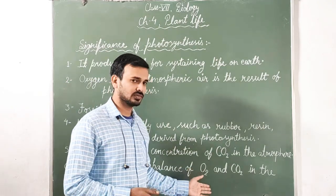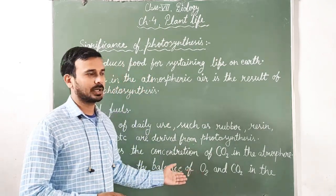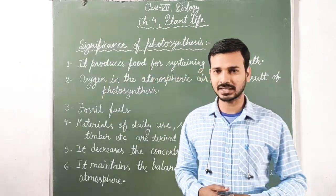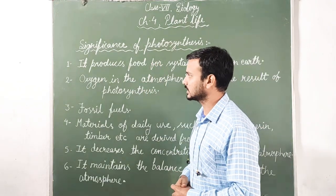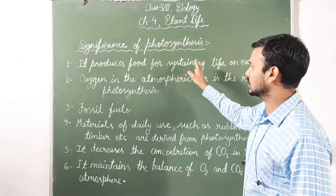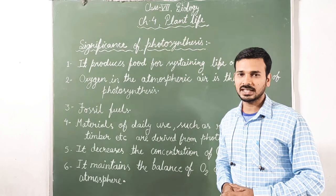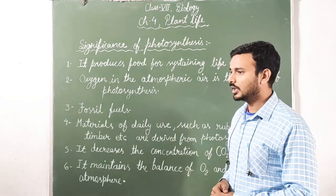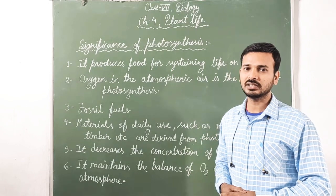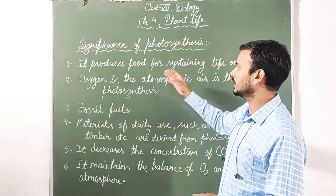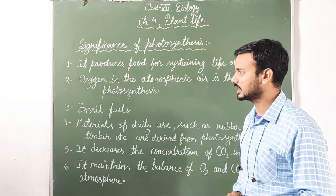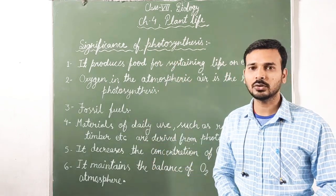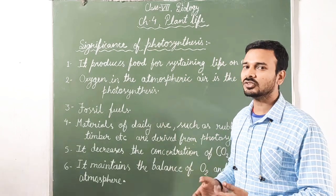Let us revise once again the significance of photosynthesis. First, it produces food for sustaining life on earth — the food that animals and human beings eat is produced by green plants through photosynthesis. Second, oxygen in the atmospheric air is a result of photosynthesis, and this oxygen is taken by human beings and animals for the process of respiration.